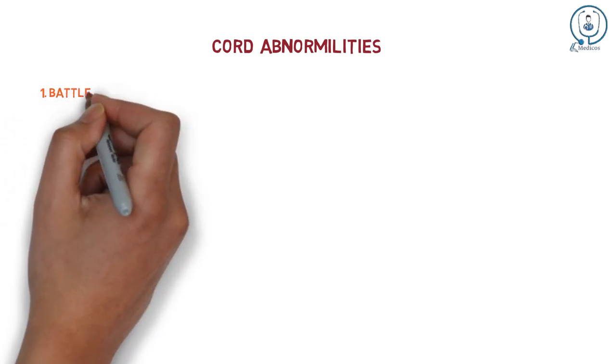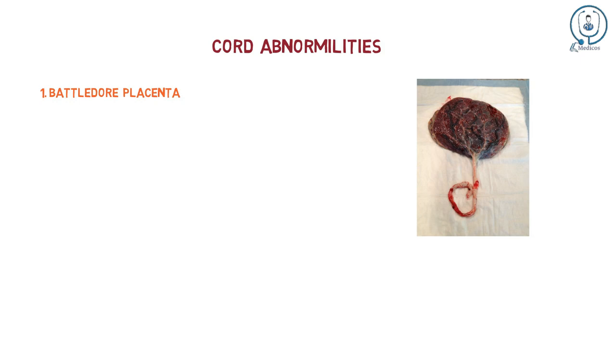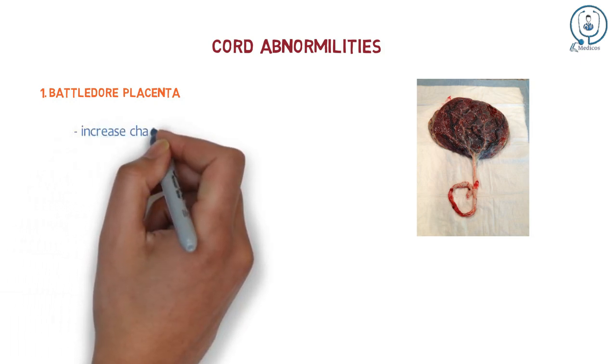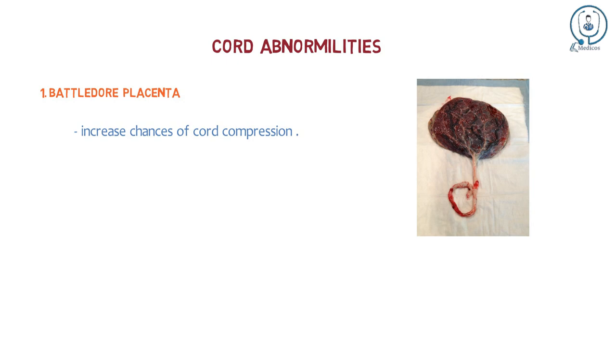Cord Abnormalities. Battledore Placenta: Here the cord is attached to the margin of placenta as shown. In cases of low implantation, there is chance of cord compression in vaginal delivery, leading to fetal anoxia or even death.